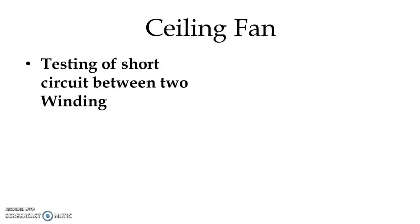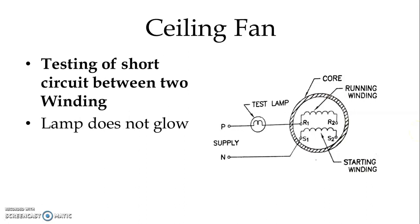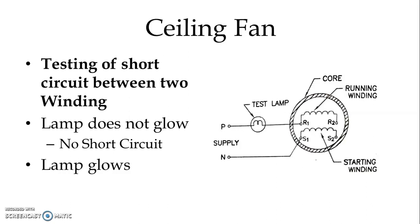For testing a short circuit between the two windings — running winding and starting winding — we again use the test lamp. One lead of the test lamp is connected to the phase and the other lead is connected to terminal R1 of the running winding. The neutral is connected to one terminal of the starting winding. If the lamp does not glow, there is no short circuit. If the lamp glows, there is a short circuit between the running and starting windings.